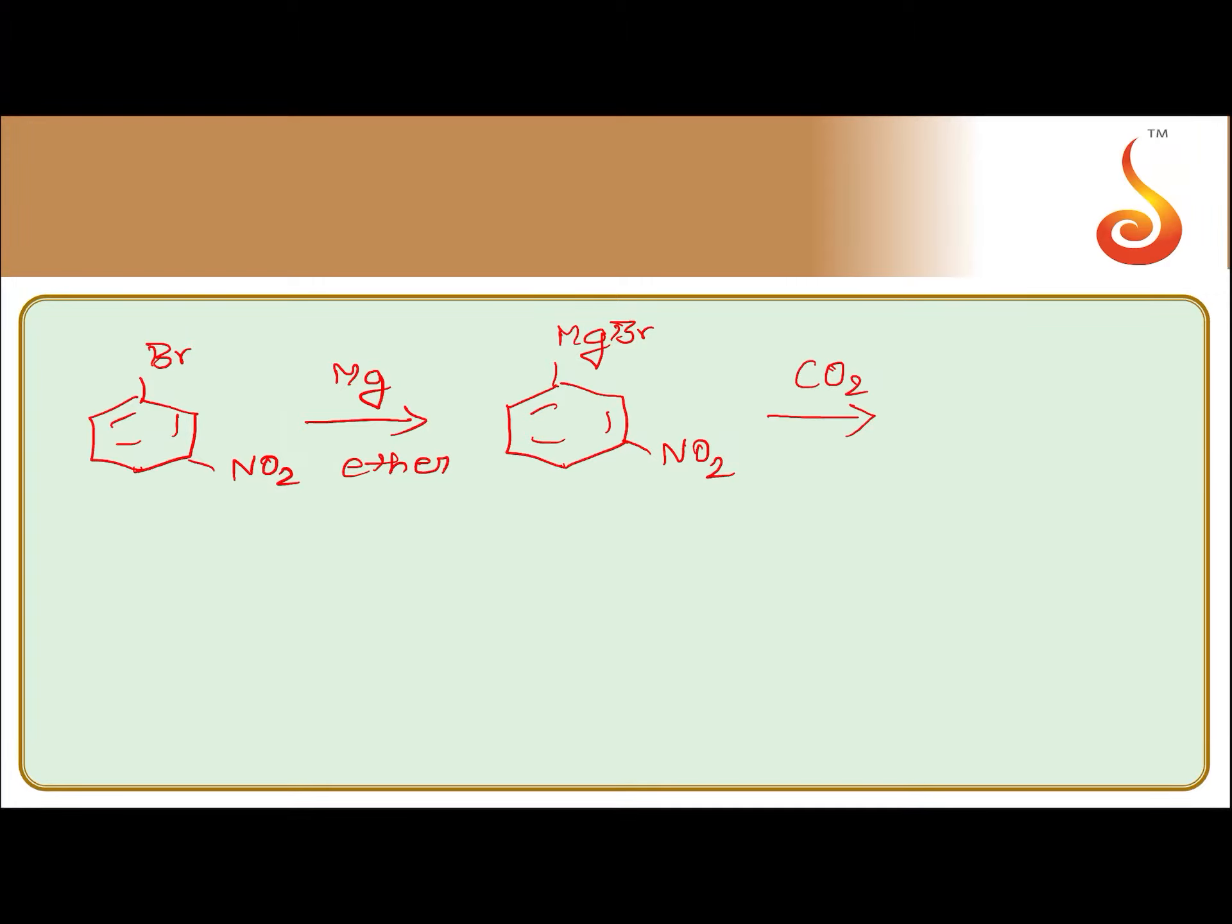Now, Grignard's reagent when treated with CO2 followed by hydrolysis. Grignard's reagent when treated with carbon dioxide will give carboxylic acids. What shortcut we learned? Remove MgBr of Grignard's reagent and put COOH.